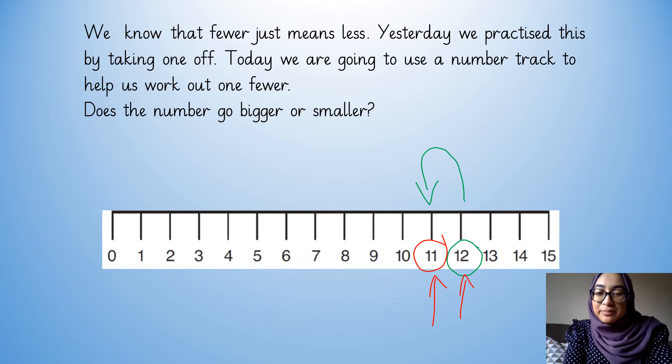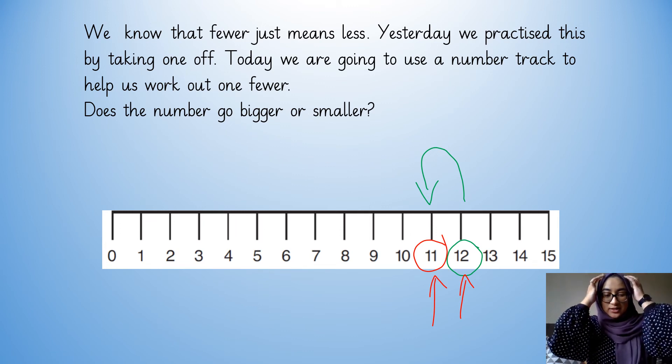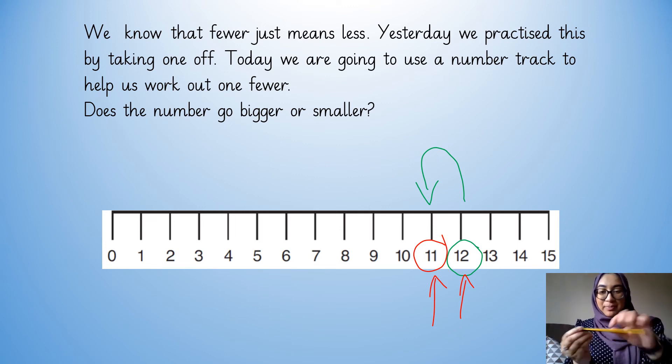Do you think the number goes bigger or smaller when you're working out fewer? Have a think in your head, and then I want you to tell your pencil or shout the answer out to me. Do you think the number goes bigger? Do you think the number goes smaller? That's right, the number always goes smaller because you're taking one off. So you go backwards on your number track.